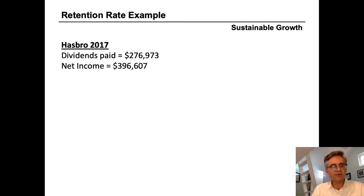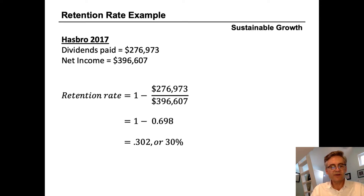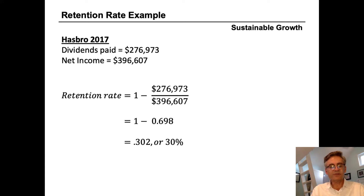Looking at the statement of cash flows for Hasbro for the year 2017, we can see they paid dividends of $276 million and had net income of $396 million. Plugging that into our retention rate formula — which is 1 minus dividends paid divided by net income — we get 1 minus 0.698, which equals 0.3. That's a 30% retention rate. What this means is that in 2017, Hasbro retained 30% of its net profit inside the company and paid out the other 70% to its shareholders.